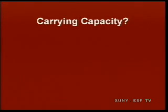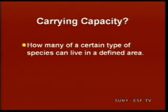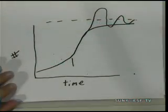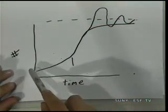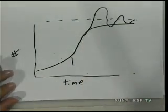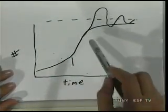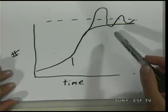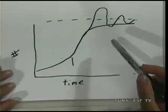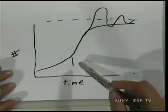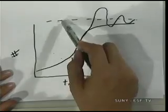Now, carrying capacity — what is it? It's how many of a certain species you can support in a defined area. If you diagram it, you see numbers of organisms over time: first numbers increase driven by exponential growth, then carrying capacity slows that growth. Controlling factors include available energy, food, and water, as well as density-dependent factors like disease — more organisms means more chance of disease. Density-independent factors, like storms, can kill off groups regardless of population size. In real life, this smooth curve isn't often observed because carrying capacity itself changes frequently.